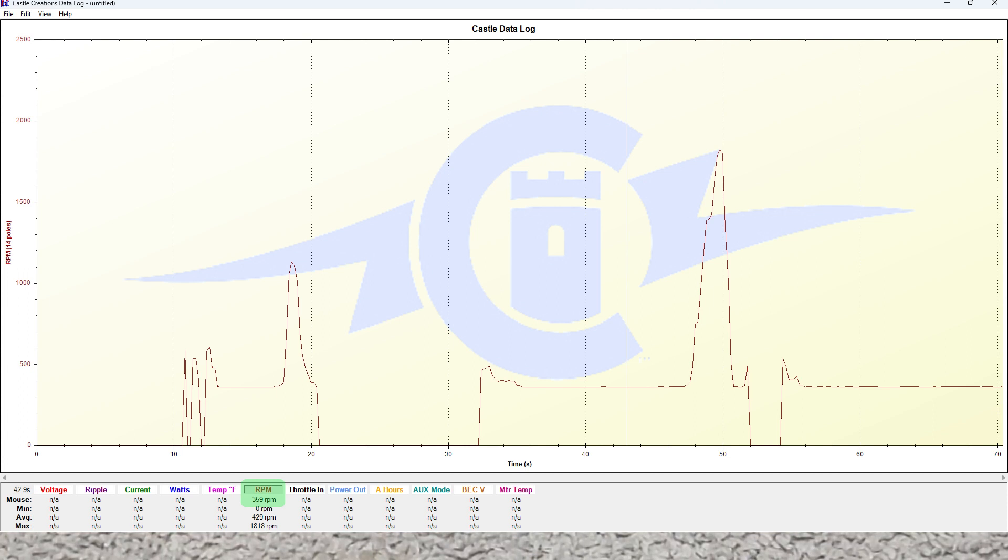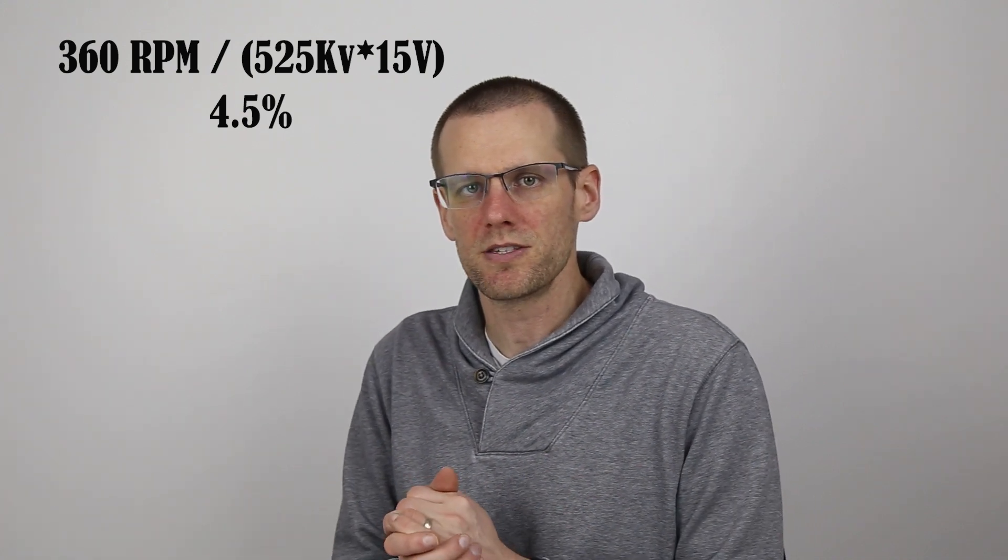and it shows us that we are getting at about the 360 RPM mark. At 360 RPM, this brushless motor is locked right in with that electronic speed control. Both of those are in sync with one another. This ultimately tells us that beyond 360 RPM, you would not need any type of sensors.